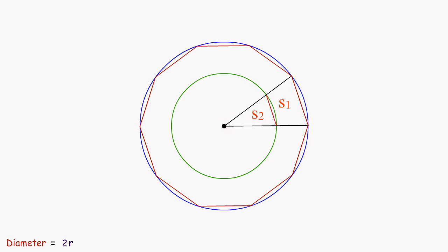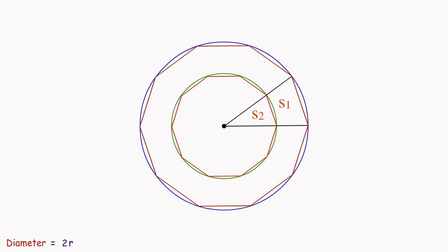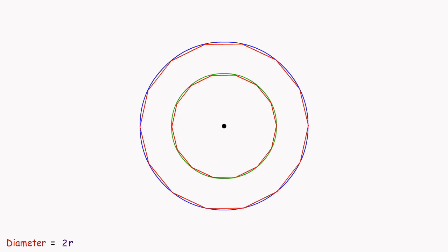Next, inscribe a polygon inside the smaller circle so that it has the same number of sides as the larger polygon. Notice that when we increase the number of sides of the polygons, it begins to resemble the circumferences of the circles.